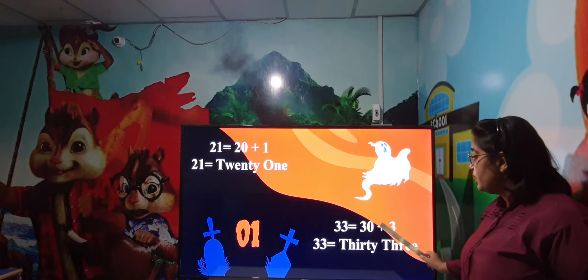Waise hi ab spelling dekhenge 65. Hume kitne words sunai de rahe hain? Do words: 60 aur doosra hai 5. To 65 — pehle kya likhenge? 60 likhenge. 65: S-I-X-T-Y (60) + F-I-V-E (5) = SIXTY FIVE.